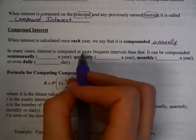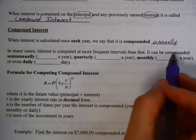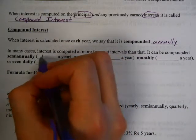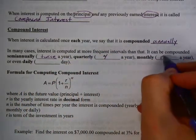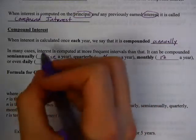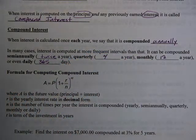In many cases, interest is computed at more frequent intervals than that. It can be compounded semi-annually, that's twice a year, quarterly, that's four times a year, monthly, 12 times a year because there's 12 months in a year, and even daily, 365 days a year.